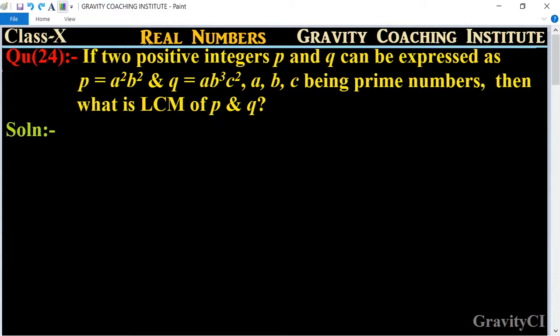Hello, Class 10, Chapter Real Numbers, Question Number 24. If two positive integers p and q can be expressed as p equal to a square b square and q equal to a b q c square, a, b, c being prime numbers, then what is LCM of p and q?